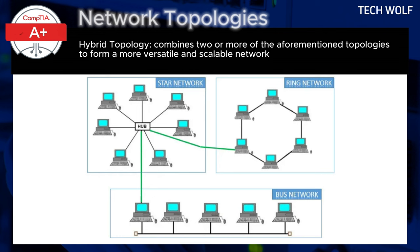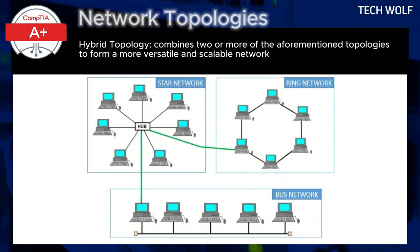In summary, network topologies provide different ways to organize the connections and data flow in a network. Bus topology is simple and cost effective but fragile. Star topology is robust but depends on a central hub. Ring topology provides equal access but is vulnerable to a single point of failure. Mesh topology is highly reliable but complex and expensive.